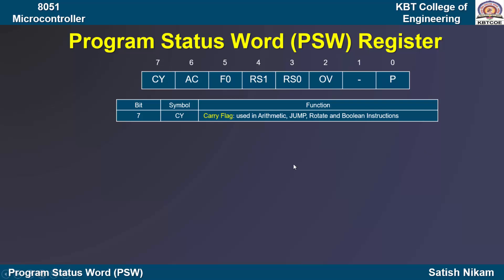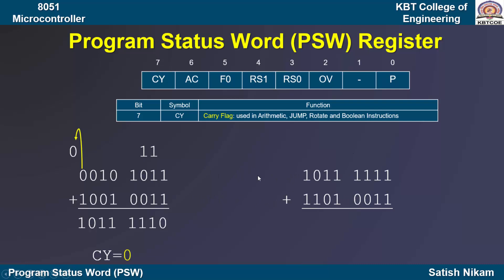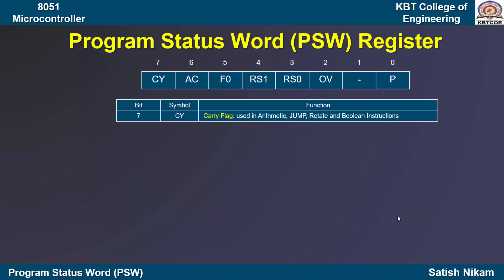Let us discuss how the carry flag gets affected. Consider an addition operation — if we perform the addition, there is no carry generated from the D7 bit, so the carry flag content will be 0. Let us consider another example: if we perform the addition and there is a carry generated from the D7 bit, then the content of the carry flag will be 1.